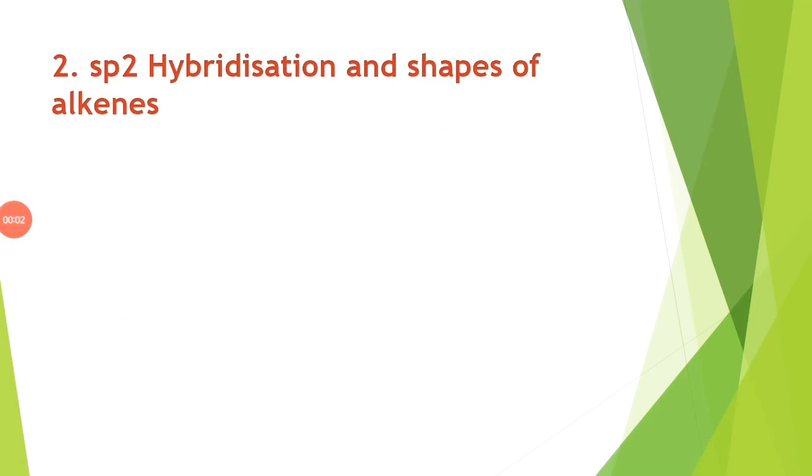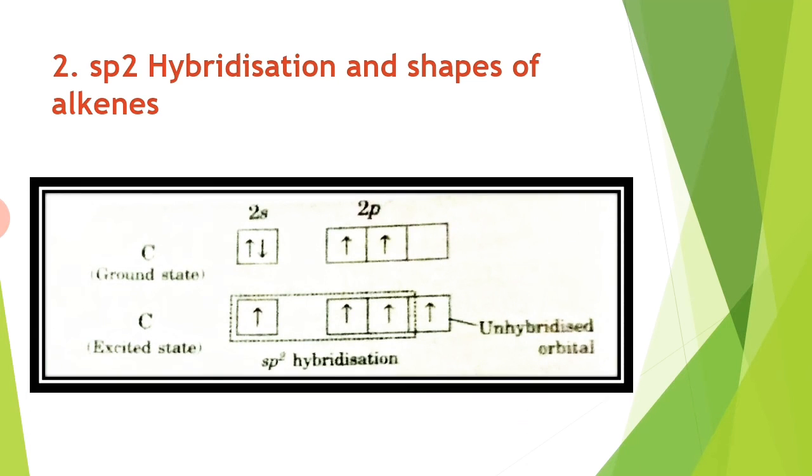Next, sp2 hybridization and shapes of alkenes. Alkenes are planar molecules, and the carbon atoms of the carbon-carbon double bond involve sp2 hybridization. Carbon atoms have four unpaired electrons in the excited state. The three hybrid orbitals from 2s and two 2p orbitals get hybridized to form three sp2 hybrid orbitals, leaving the 2pz orbital unhybridized.